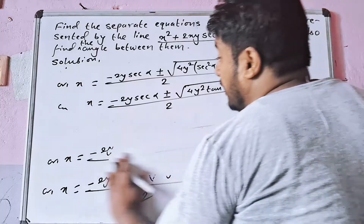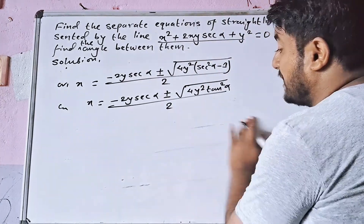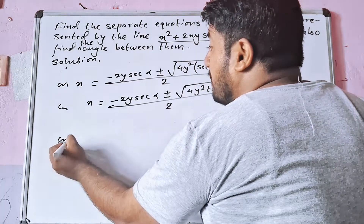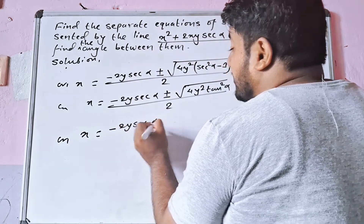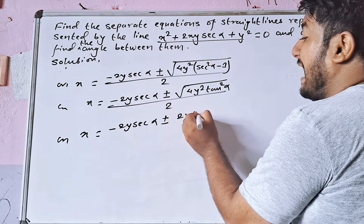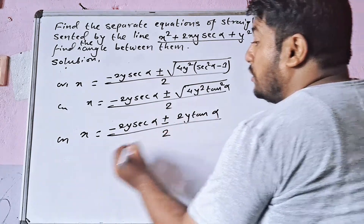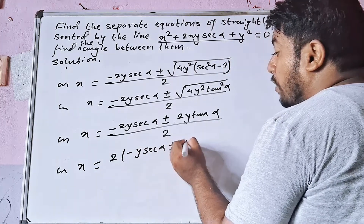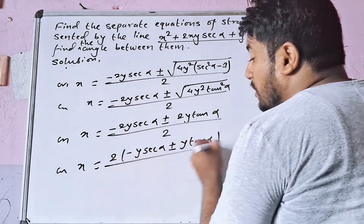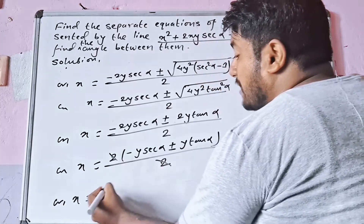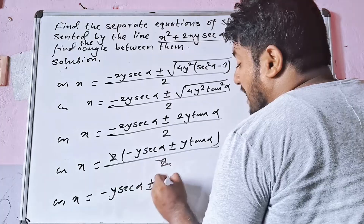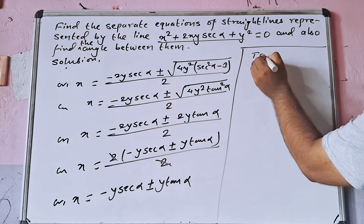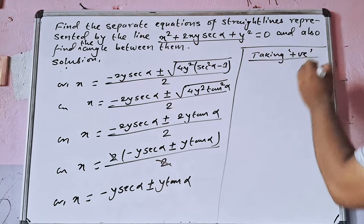Taking 4y² common inside the root: x equals minus 2y·secα plus or minus root under 4y²(sec²α minus 1), divided by 2. Simplifying, 2 cancels, giving x equals minus y·secα plus or minus y·root(sec²α minus 1).